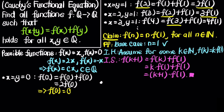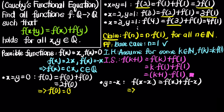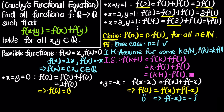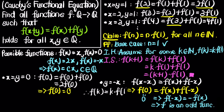Now, what about negative integers? If we let y = -x, we get f(x-x) = f(x)+f(-x), so f(0) = f(x)+f(-x). Since f(0)=0, this tells us f(-x) = -f(x), meaning f is an odd function. This takes care of negative integer values.